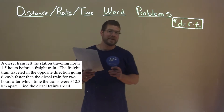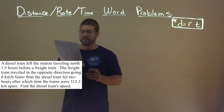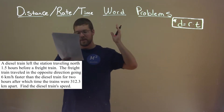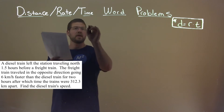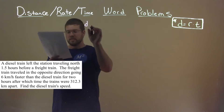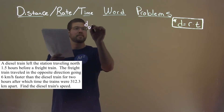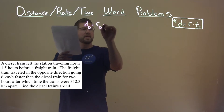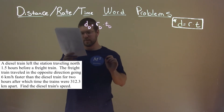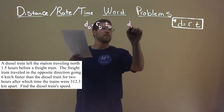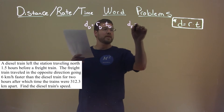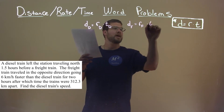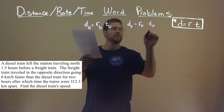Well, distance equals rate times time here. So let's write this equation for both the diesel train and the freight train. The distance of the diesel train is equal to the rate of the diesel train times the time of the diesel train. The distance of the freight train is equal to the rate of the freight train times the time of the freight train.